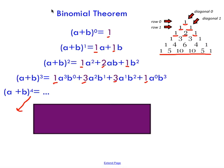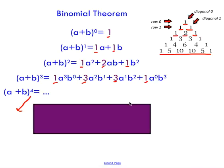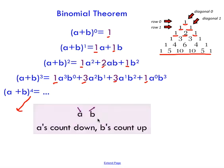So you're thinking — great, that helps with coefficients, but what about all the variables and exponents we got in the middle during our foiling process? Well, it turns out there is a pattern that will help you determine how to write the exponents on your variables as well.